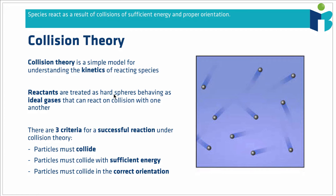Under collision theory, reactants are treated as hard spheres behaving as ideal gases under the kinetic theory of gases, which we'll describe a little bit later. Under the model of collision theory, there are three criteria that have to be satisfied for a successful reaction to take place between two reactant particles. We imagine we have some kind of system, whether it's a solution or a box of gas — our reactants are hard spheres flying around at some speed, each with some kinetic energy, in semi-random motion. The first thing that must happen is those two particles must collide with one another; they have to meet, they have to have physical contact.